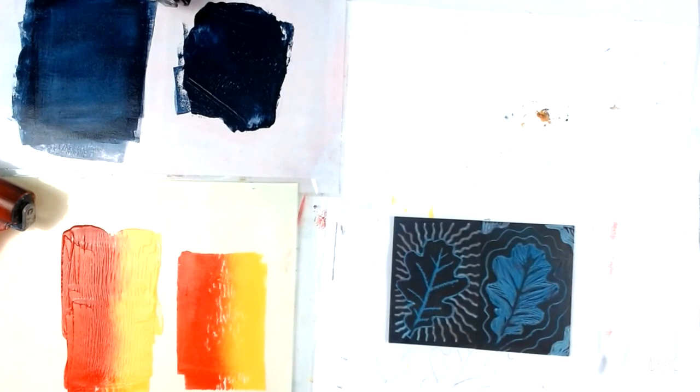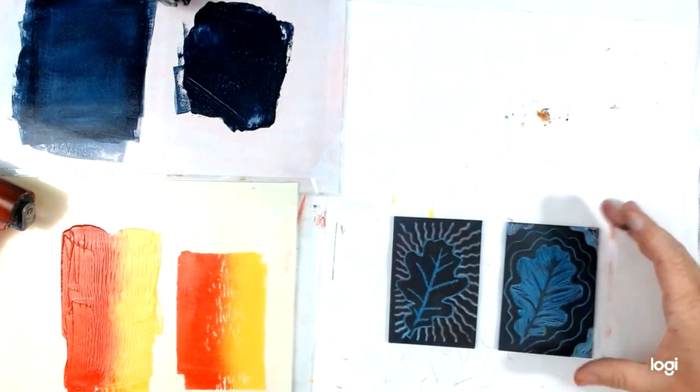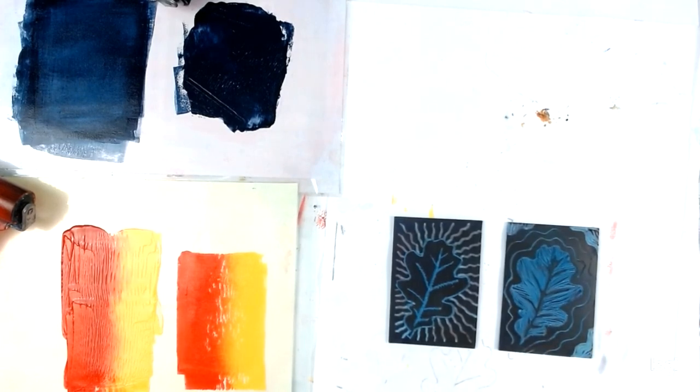So hopefully you can see that from one block you can do massive range of different experiments with color. But once you've had enough of this block, of this exercise, I'm going to suggest you cut it in half because you've got a positive and a negative. And this is the reason we did make sure they were about the same size and placing, because what we look at is printing them over the top of each other.